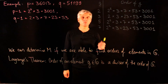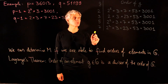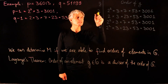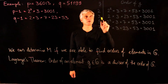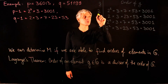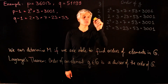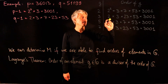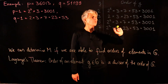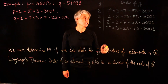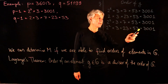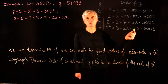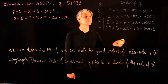Suppose we are able to compute orders of elements, and we take more or less random elements in the group: g = 2 mod n, 3 mod n, 5 mod n, and 7 mod n. Suppose we are able to compute the orders of these elements. For these orders we will not have factorizations, but having this factorization is convenient just to see what's going on in the background.